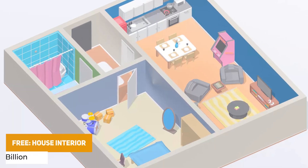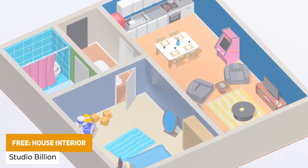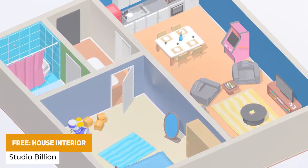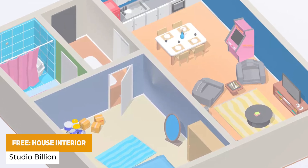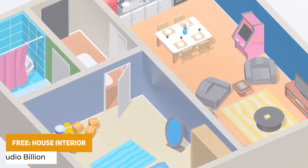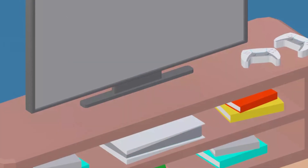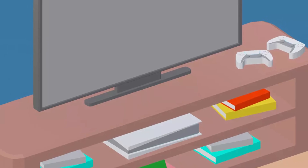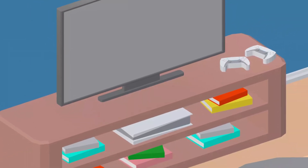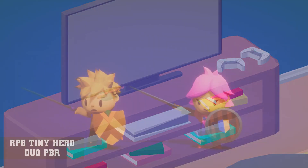The next one is the Free House Interior. This includes a house interior with 40 different props at varying polygon sizes between 50 and 4,600 — props to decorate a stylized house interior.